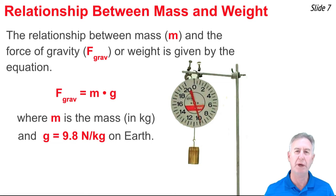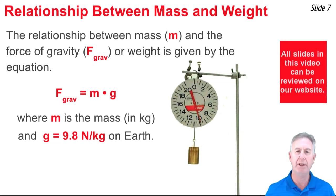So we've learned how mass and weight are different. But how are they related? It turns out that they're related by an equation that goes F_grav equals M times g.